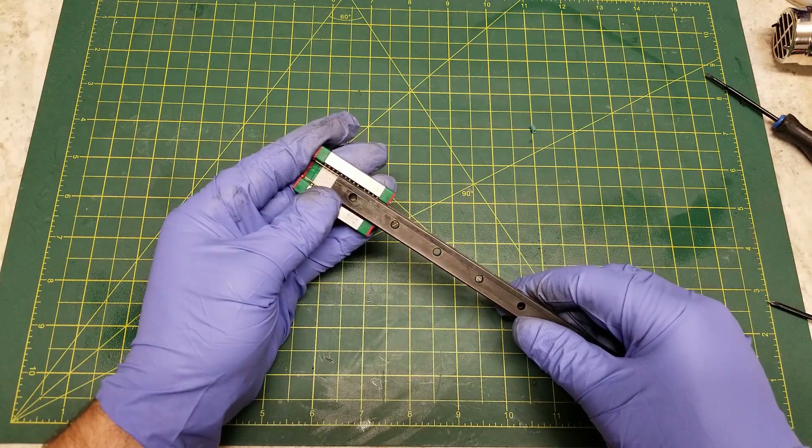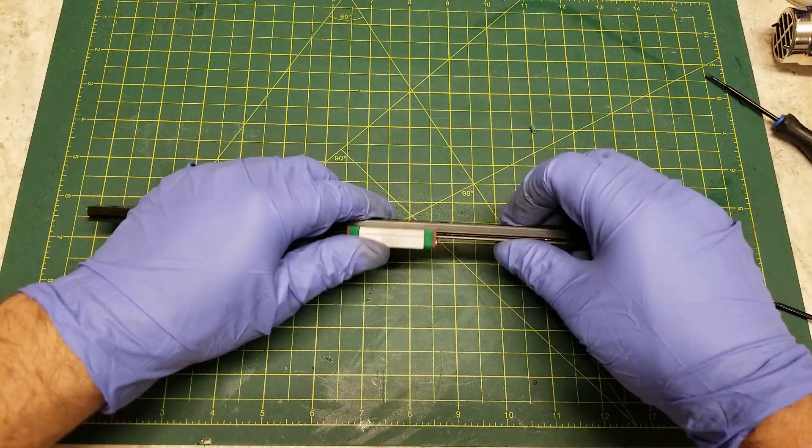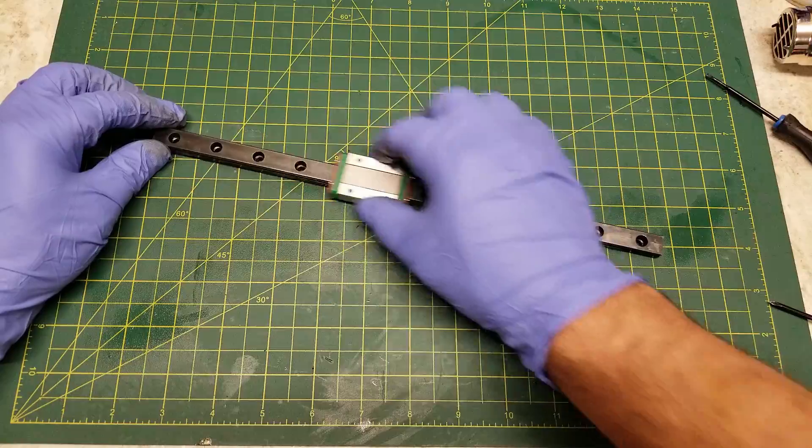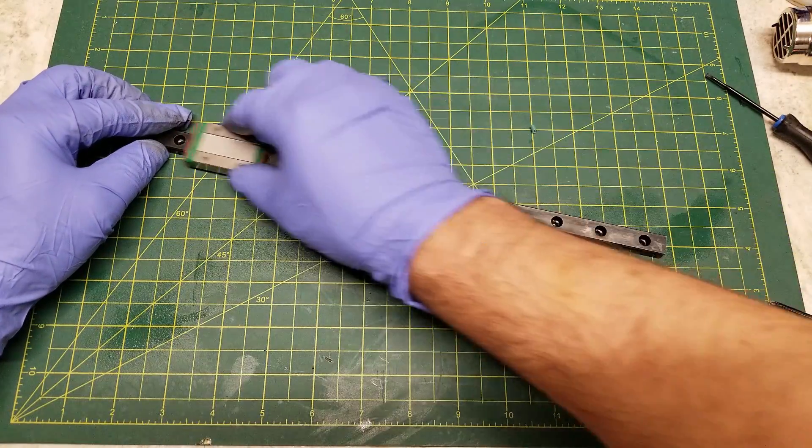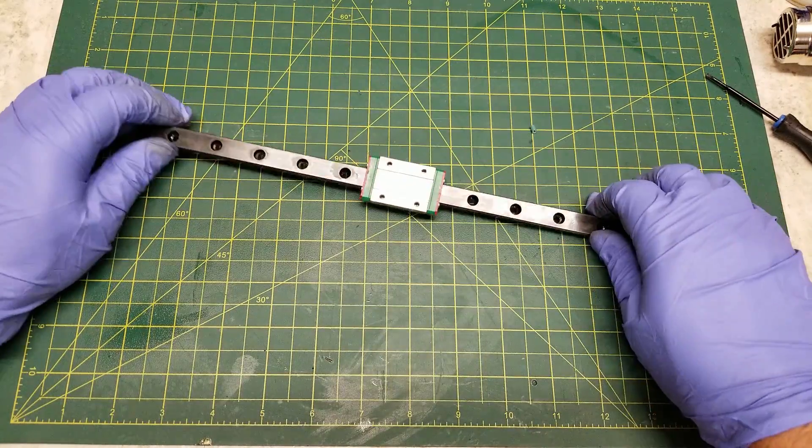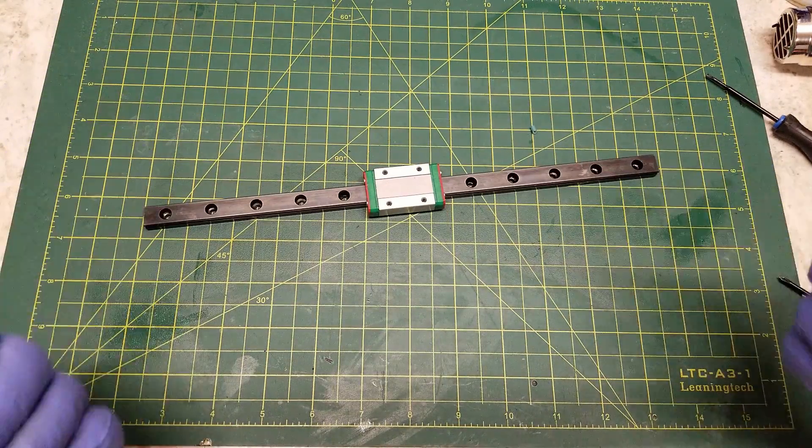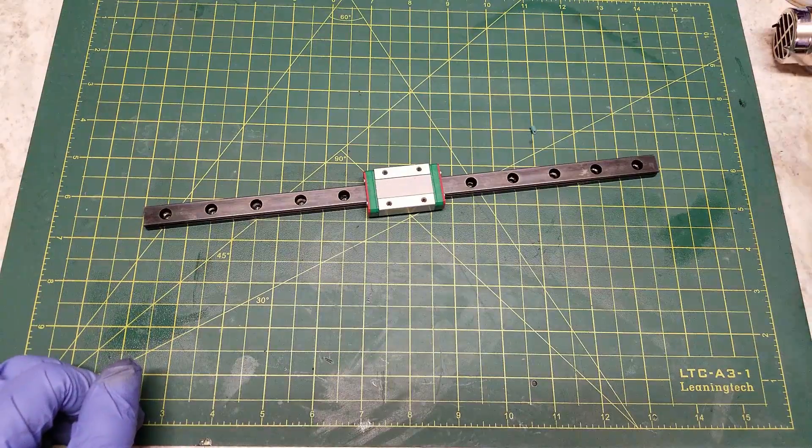And that is how you cold blue a linear rail. It is a very simple process. It is relatively inexpensive. Cold bluing bottles and kits can be purchased for relatively cheap prices online or at any hunting store for example. It does provide some degree of rust prevention. In my case here I mostly did this for the look.